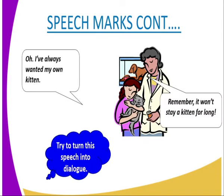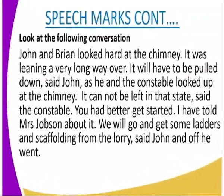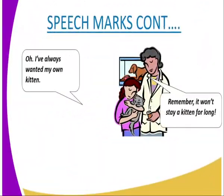You can also see from the pictures above — these are the words spoken by different speakers. We can see a picture of someone who looks like a father or parent and a child. The child says 'I've always wanted my own kitten,' and the response, shown in speech marks, is 'Remember, it won't stay a kitten for long.'